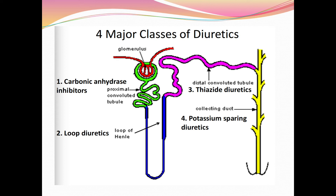Next, loop diuretics act on the loop of Henle — specifically the ascending limb of the loop of Henle. Thiazide diuretics act on the distal convoluted tubule. Potassium-sparing diuretics act on the collecting duct, where all nephrons come together to form the collecting duct, from which urine is excreted via the ureter and urethra.